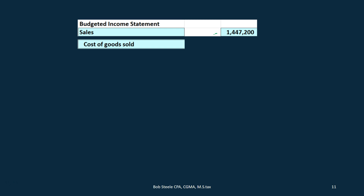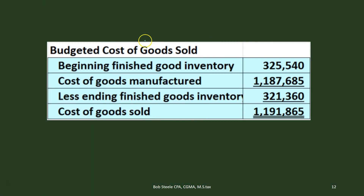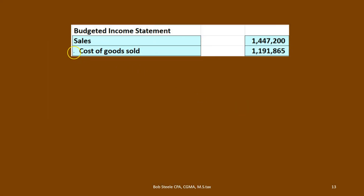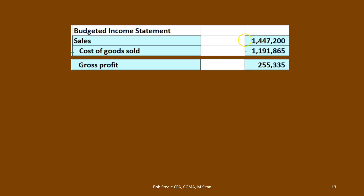Next we have the cost of goods sold calculation, which we've already calculated. We did that in the budgeted cost of goods sold — that's in the prior recording where we took the cost of goods manufactured figure, which we needed to create the cost of goods sold calculation. We then take that cost of goods sold number and plug it into our budgeted income statement.